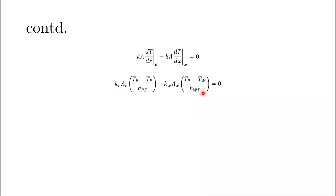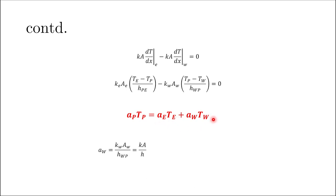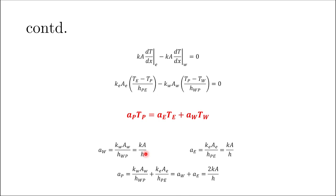We can see T_E, T_P, and T_W appearing in the system and rearrange into the standard finite volume form: a_P·T_P = a_E·T_E + a_W·T_W, where a_W = k·A/h, a_E = k·A/h (assuming constant material properties, constant cross-section, and uniform grid), and a_P = 2·k·A/h, which equals the sum of a_E and a_W.